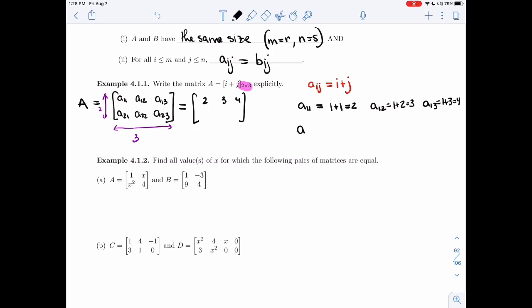And we keep going. A-2-1 would be 2 plus 1, which is 3. A-2-2 would be 2 plus 2, which is 4. A-2-3 would be 2 plus 3, which is 5. So now I get 3, 4, 5. So writing what I had over here is the same as writing this explicitly, 2, 3, 4, 3, 4, 5.